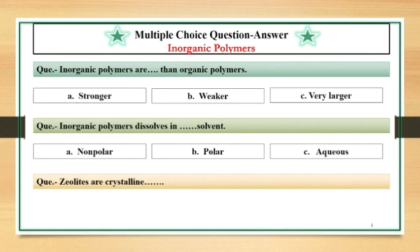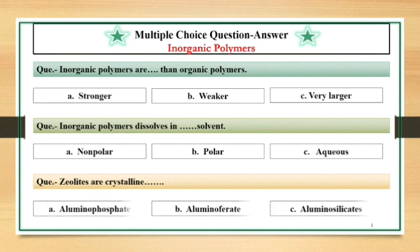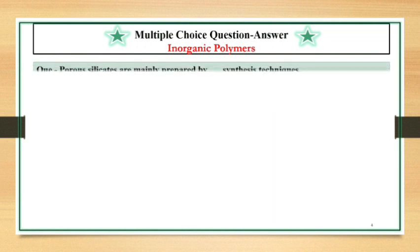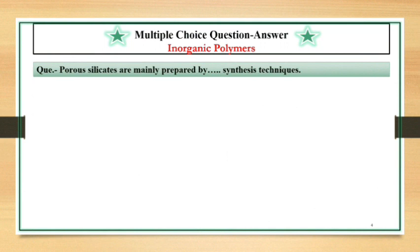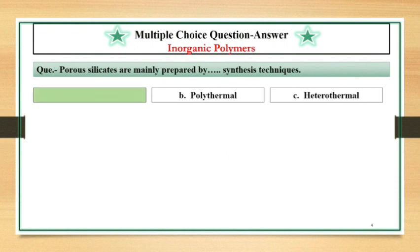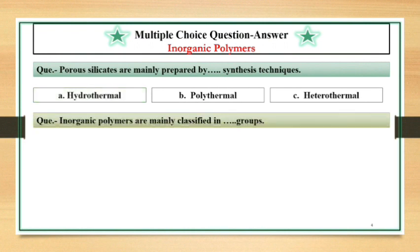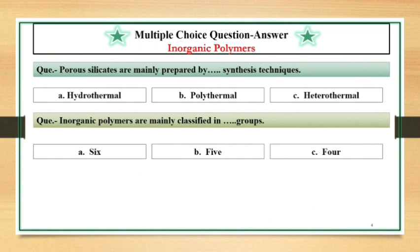Zeolites are crystalline dash dash dash. Aluminosilicates. Porous silicates are mainly prepared by dash dash synthesis techniques. Inorganic polymers are mainly classified in dash dash groups. 4 groups.